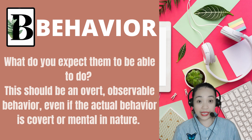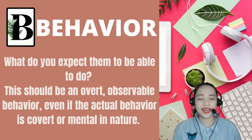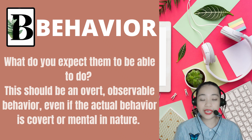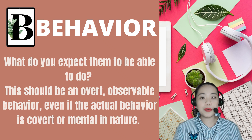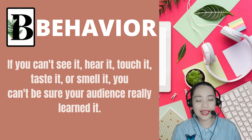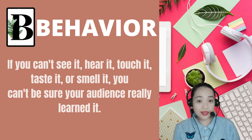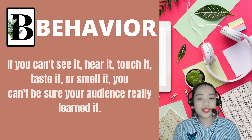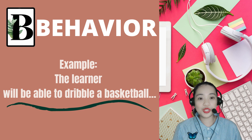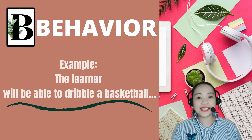Second is letter B, which stands for BEHAVIOR. It answers the question: what? What do you expect them to be able to do? This should be an overt, observable behavior even if the actual behavior is covert or mental in nature. If you can't see it, hear it, touch it, taste it, or smell it, you can't be sure your audience really learned it. Example: the learner (actor) will be able to dribble a basketball (behavior).